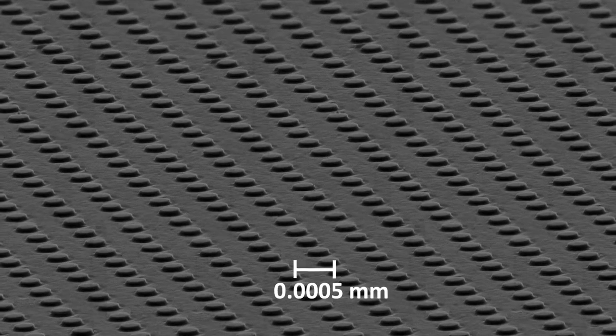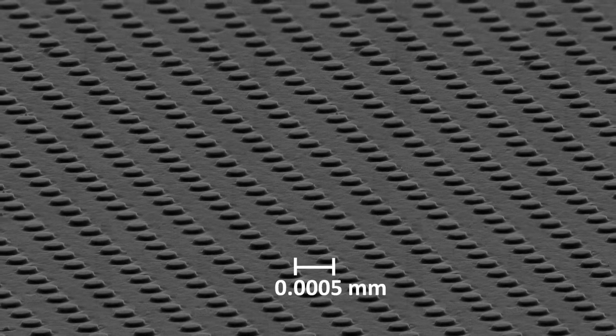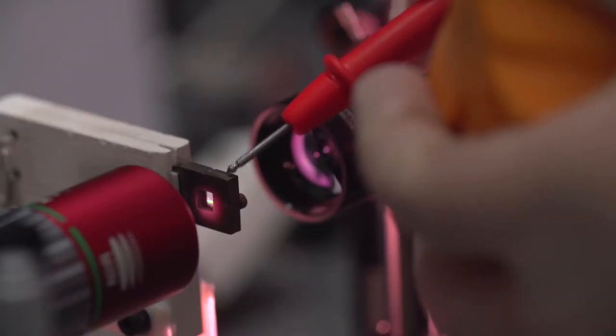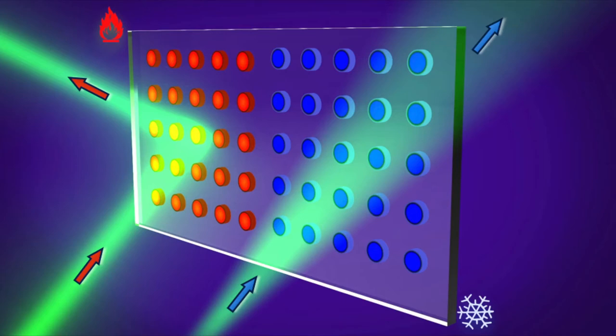Our smart mirror consists of dielectric nanoparticles which are carefully designed and arranged within a single layer. By adjusting the temperature of that thin layer, we are able to control the optical properties of those nanoparticles so that the entire surface can either transmit or reflect the incoming light on demand.